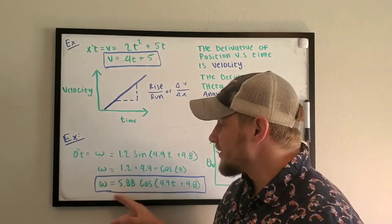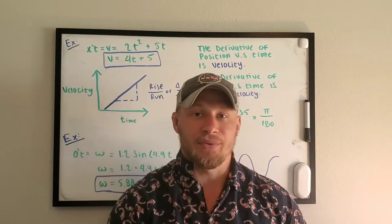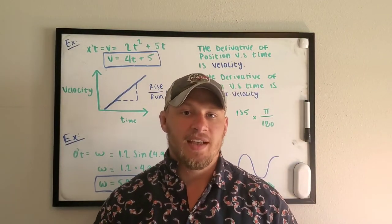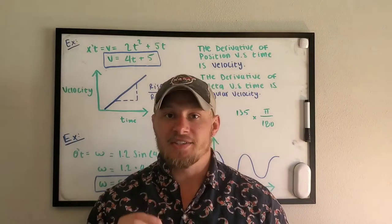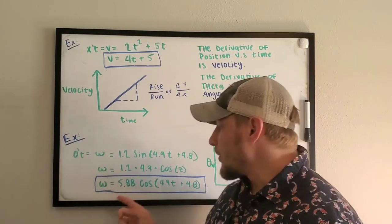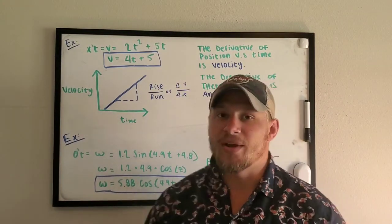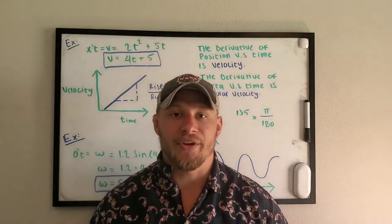But we're going to use this function here to plug into the computer code and it will update with that delta t, that change in time. Every 0.1 seconds, it will come up with that new angular velocity. And that's how the computer will run the code. So we just found angular velocity. It was just like finding regular velocity with the springs. The springs, we had position versus time graph, but this week we had an angle versus time graph. So we took the derivative of the angle versus time and found angular velocity.